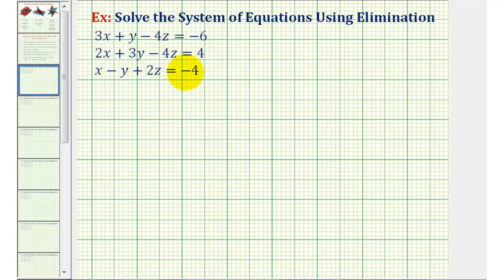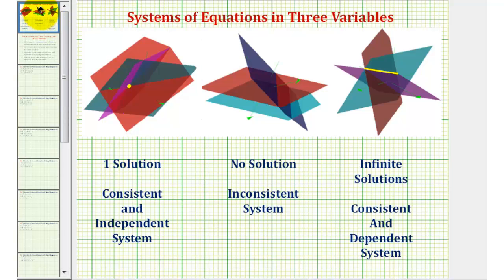Before we solve this, to get a better understanding, if we graph these equations in space, each of these would be a plane. So if we graph three planes in space, there are three possibilities. The planes could intersect in one point, which means the system would have one solution. So we can say the system is consistent and independent — consistent because it has a solution, and independent because it has one solution.